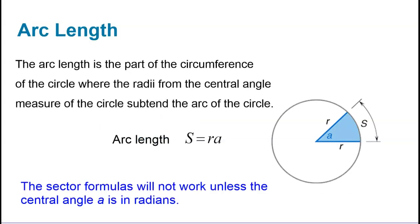So first thing that we're going to look for is the arc length, and the arc length specifically is the part of the circumference over here. It's that part of the circumference right there where the radii from the central angle measure, they subtend the circle, and basically they split it up. And so the angle that's right in here is the same angle that's out here. We're looking for that length of that arc.